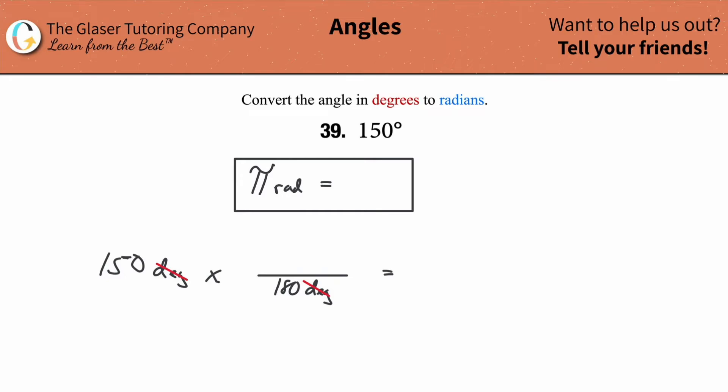So now, once those degrees cancel, I'm going to take the radian measurement, and that has to go in the numerator. Now, notice the radians will not cancel the unit there, and therefore, that's what I want. My answer is going to be in terms of radians.